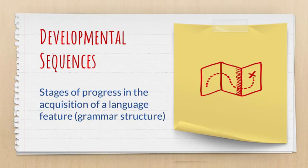So what are developmental sequences? To put it simply, they are stages of progress in the acquisition of a language feature — and by that we mean a grammar structure. These sequences have been determined based on spontaneous speech, and they have been documented for some features in some languages, not everything.